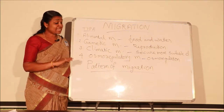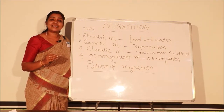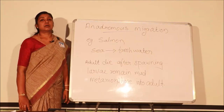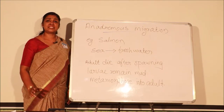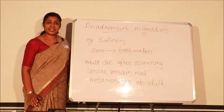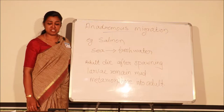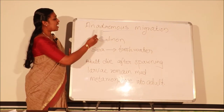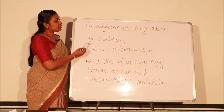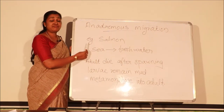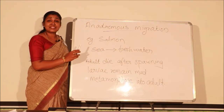Today let's see about the patterns of migration. One is anadromous migration and the other is catadromous migration. The form or pattern of migration in different species is different. Today we will look at anadromous migration and catadromous migration.